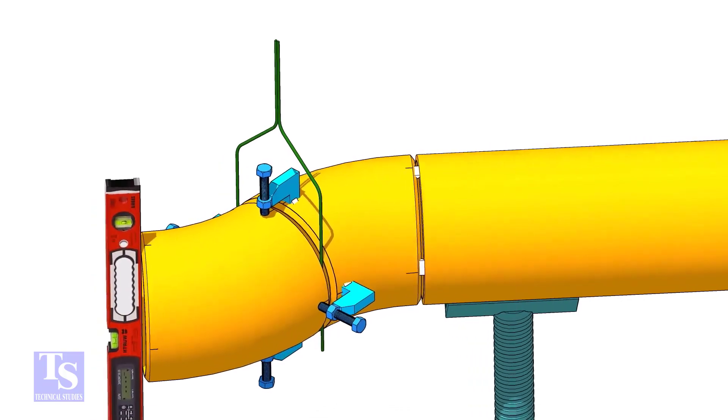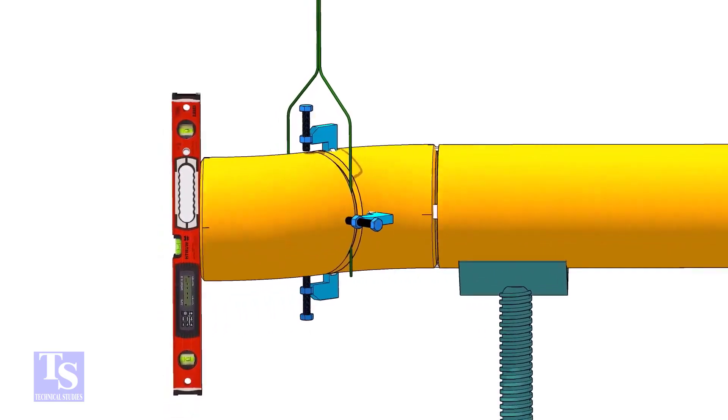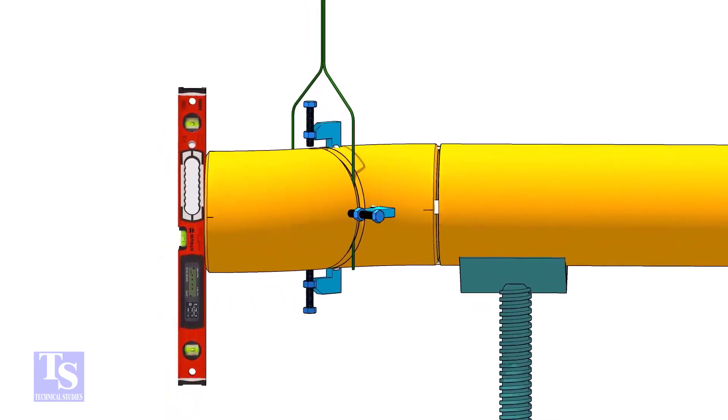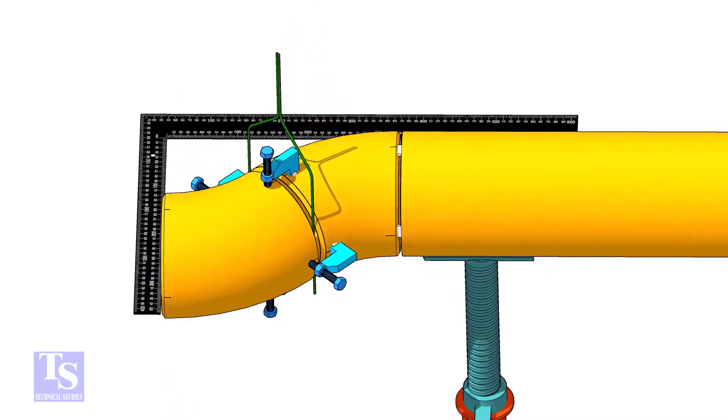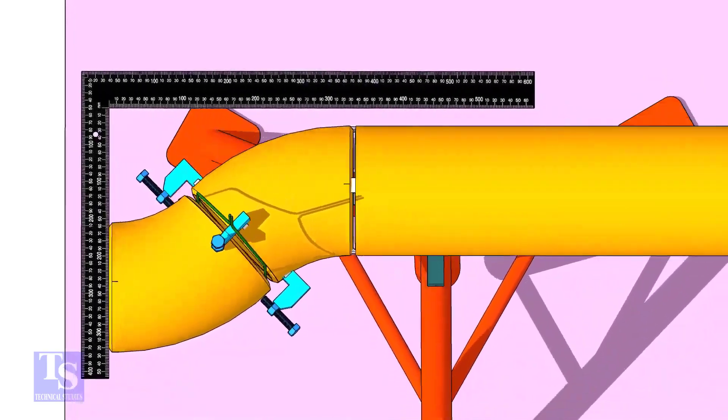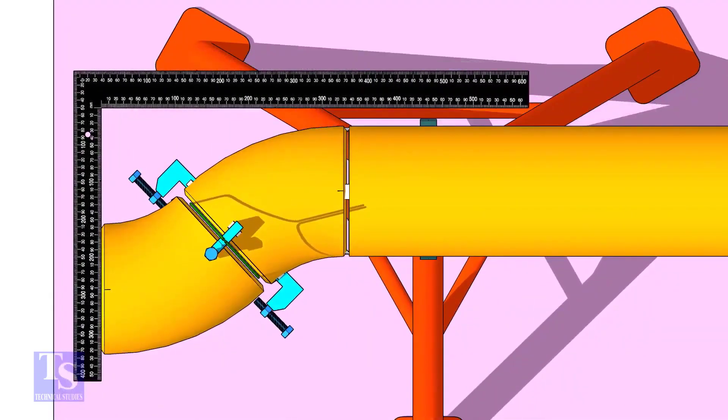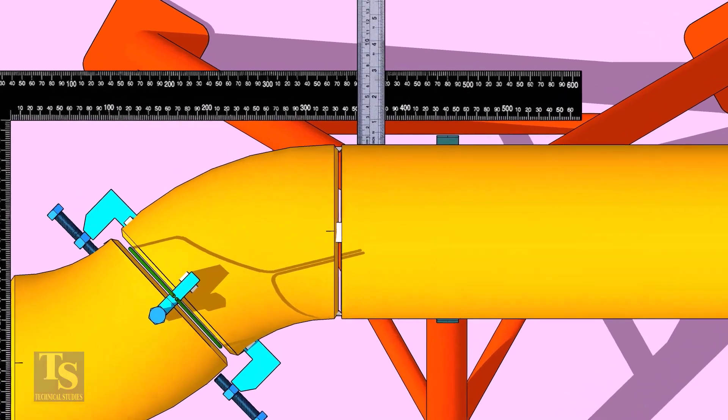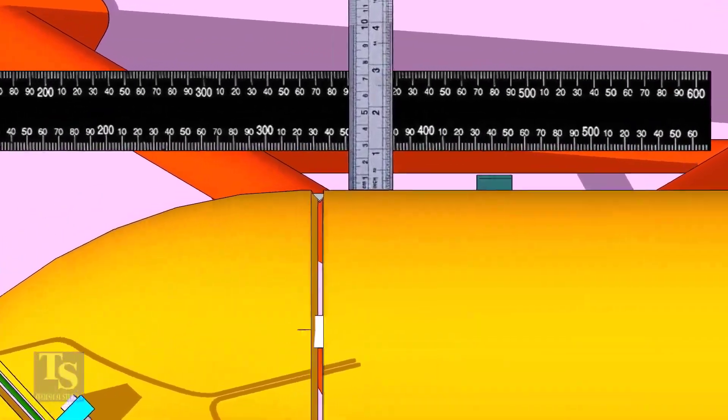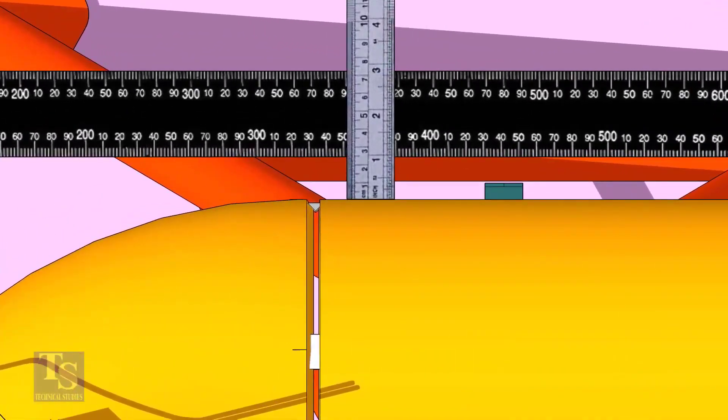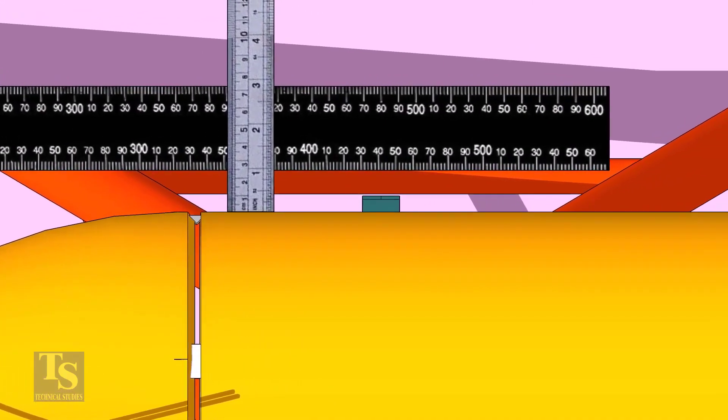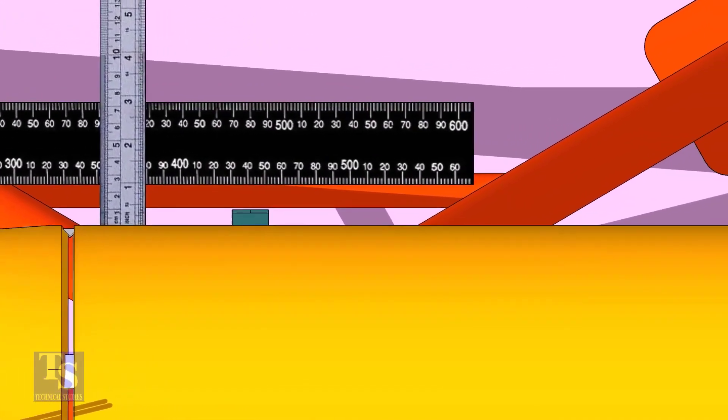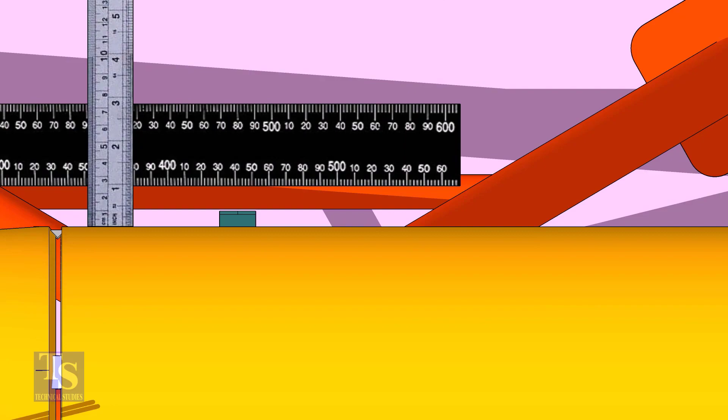Check if the face is level. If both the measurements are the same, tack weld on the top and bottom side of the joint. Make sure that the right angle is not tilted.